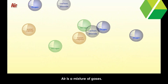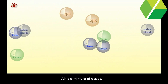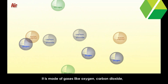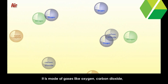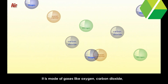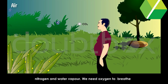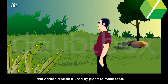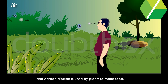Air is a mixture of gases. It is made of gases like oxygen, carbon dioxide, nitrogen, and water vapour. We need oxygen to breathe, and carbon dioxide is used by plants to make food.